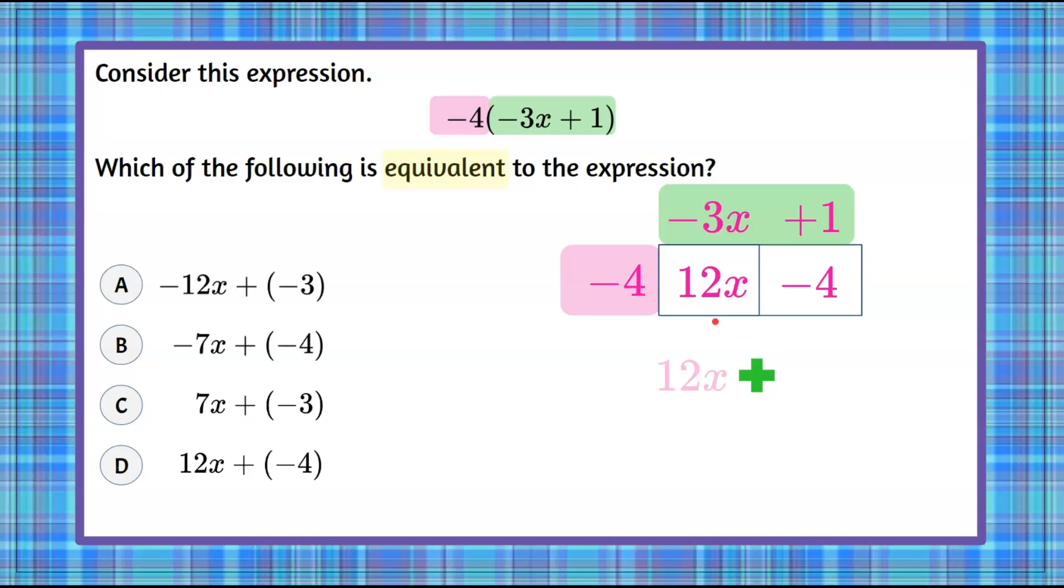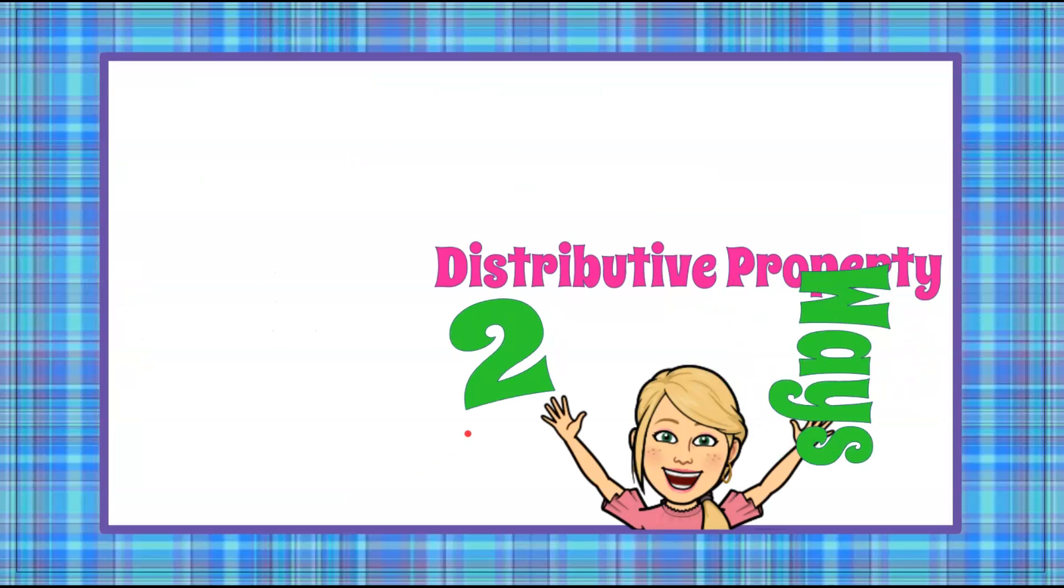So we have 12x add our negative 4, which again is answer choice D. So there you have it. That is distributive property two different ways.